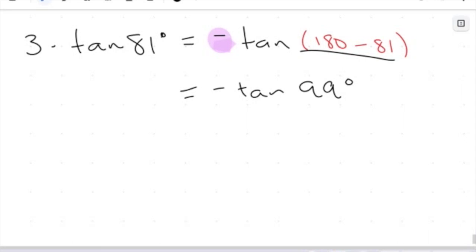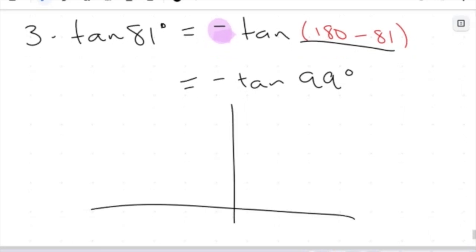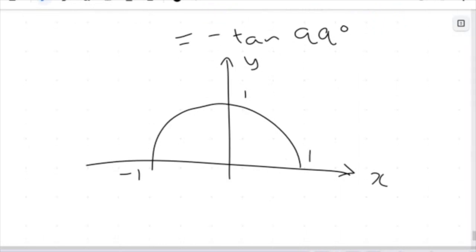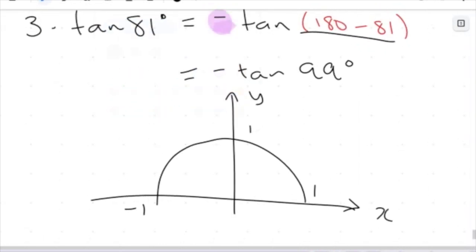Now this gives me negative tan of 99 degrees. And just for fun, let's just have a look at how this will look on our unit circle, just confirm that this is indeed correct. So I have 1, 1, negative 1 here. I have my y-axis and my x-axis here. Okay, we're looking at tan of 81. So if we draw a triangle from the origin, we make an angle of 81 degrees.